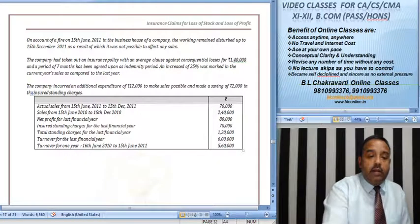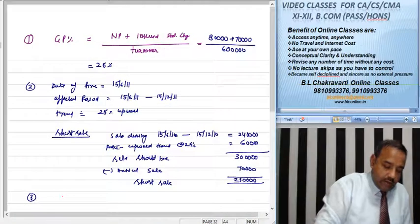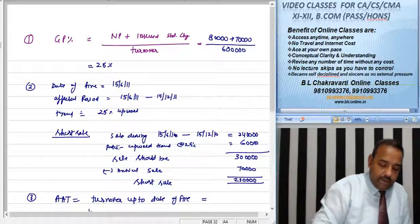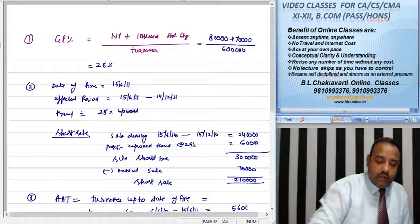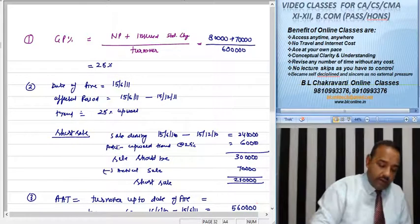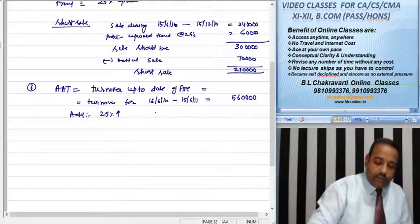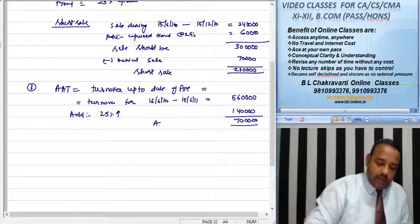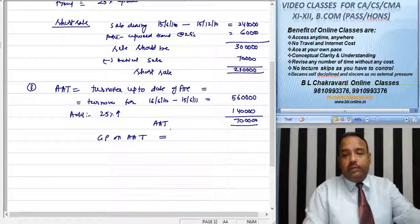AAT means Adjusted Annual Turnover — that is, turnover up to the date of fire. The turnover from 16th June 2010 to 15th June 2011 has been calculated in the question as Rs 5,60,000. Adding the 25% upward trend to this gives us Rs 7,00,000 as our Adjusted Annual Turnover (AAT).